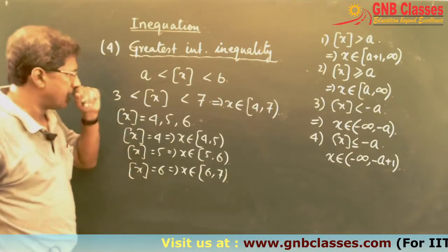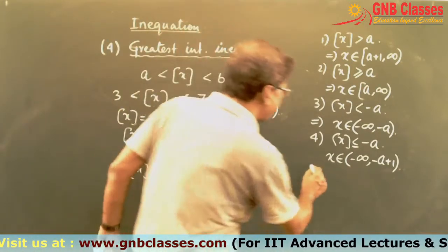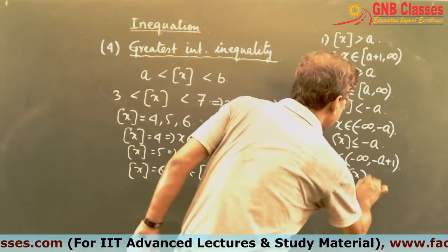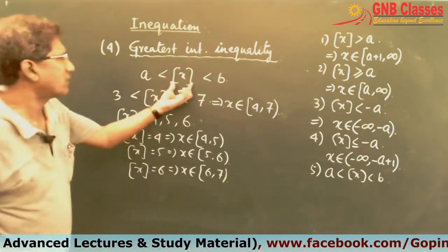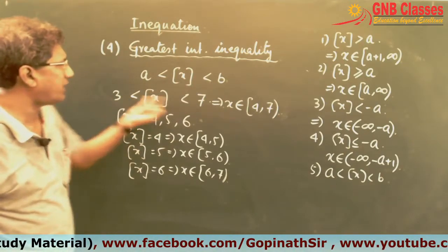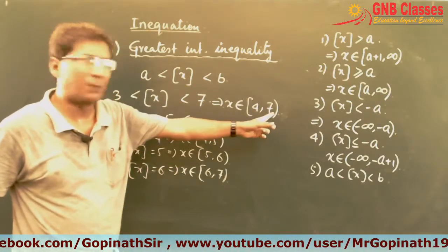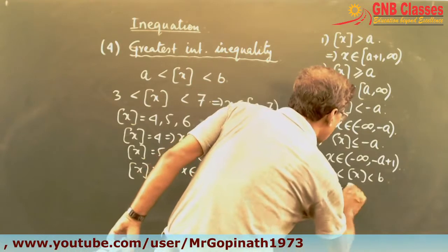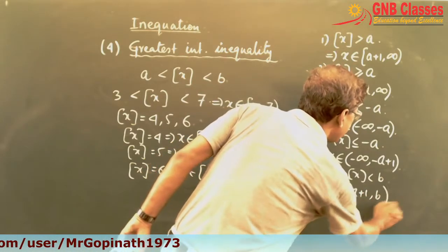So this is the fifth formula. When ⌊x⌋ > a and ⌊x⌋ < b — for example when ⌊x⌋ > 3 and ⌊x⌋ < 7, the answer was x ∈ [4, 7) — we write x belongs to [a+1, b).